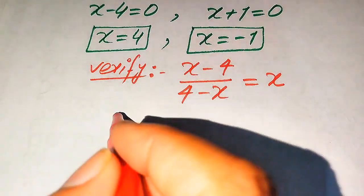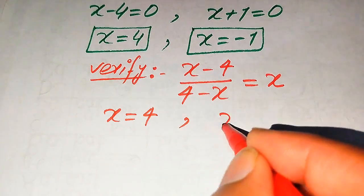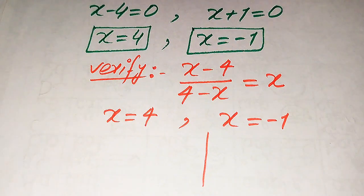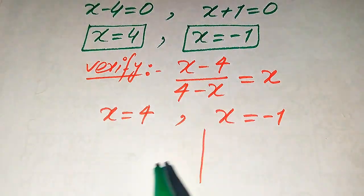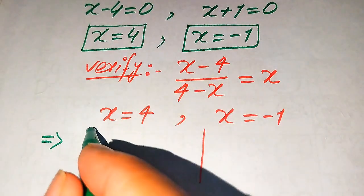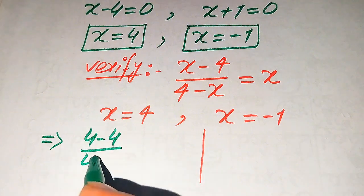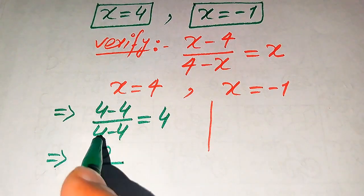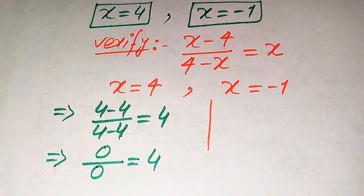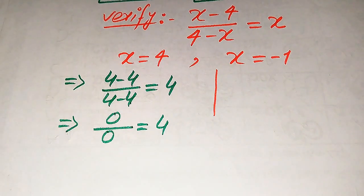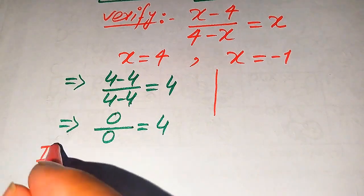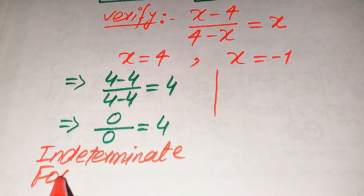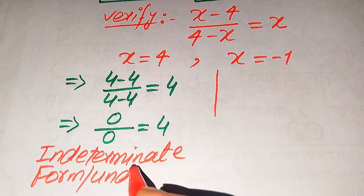We verify x equals 4 on the left side and x equals minus 1 on the right side. When we put x equals 4 into the equation, the numerator becomes 4 minus 4 equals 0, and the denominator becomes 4 minus 4 equals 0, giving 0 over 0, which is known as the indeterminate form — or in other words, undefined.